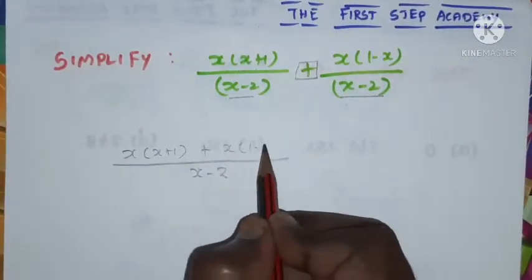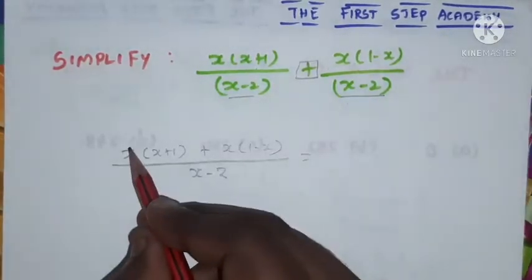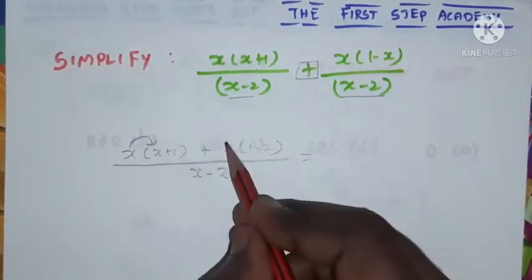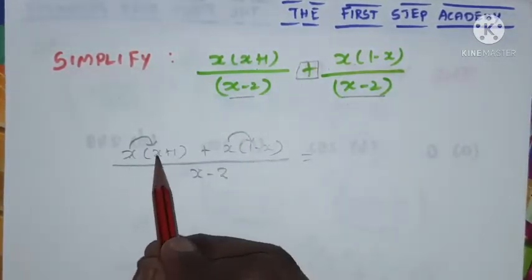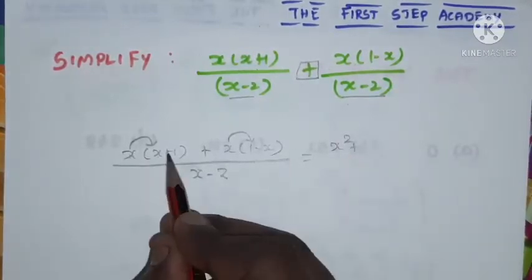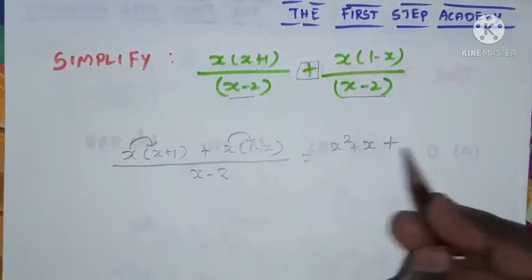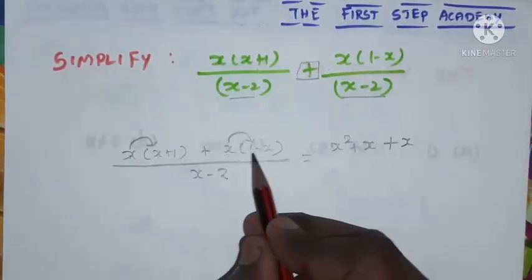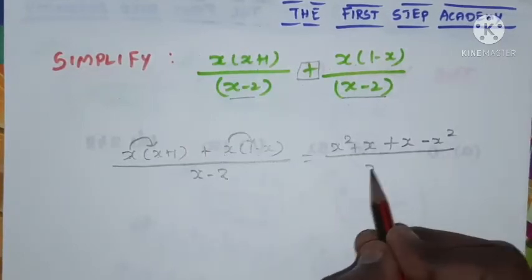Next step, just bring this x inside in this term and bring this x inside in this term. In multiplication, x into x is x squared, then plus x into 1 is x, plus x into 1 is x. Plus x into minus x, hence minus x squared, divided by x minus 2.